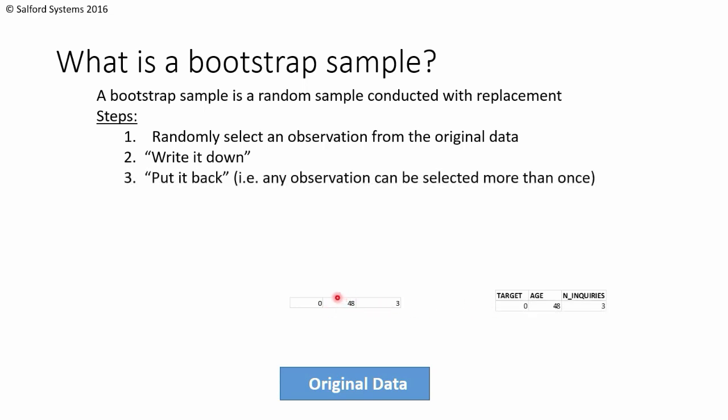Then we're going to put this observation back. What that means is we can draw the same observation more than once. So we'll put it back. And then to generate our bootstrap sample, we're going to continue this process capital N number of times. Capital N is the number of observations in the original sample.